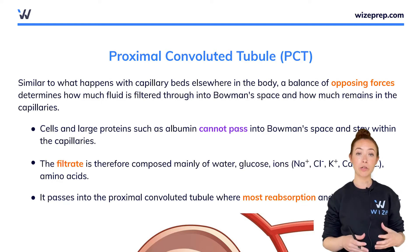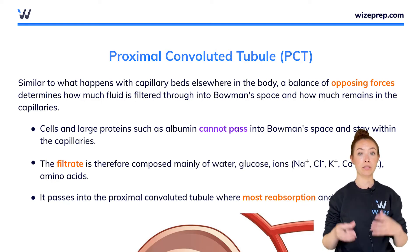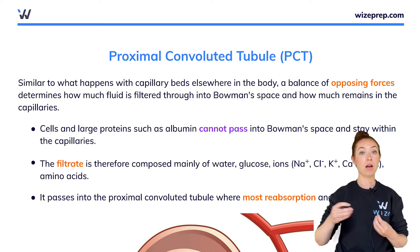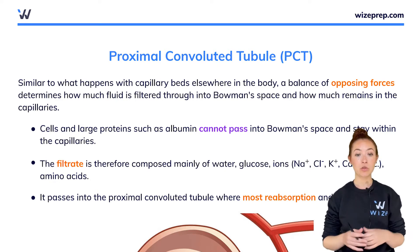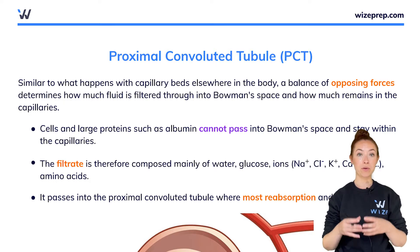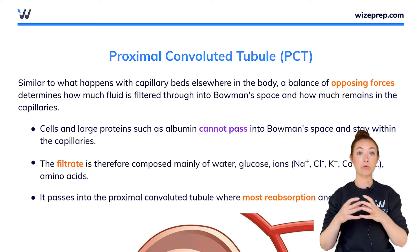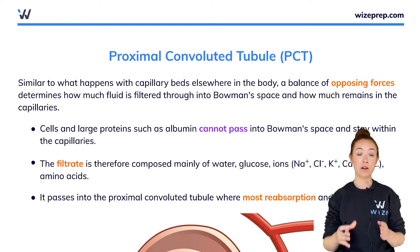Blood goes from the afferent arteriole into the glomerulus and some of it gets filtered out and becomes the filtrate as it moves into Bowman's space. In this lesson we're going to talk about what happens as filtrate starts to form and the first section of the nephron that's called the proximal convoluted tubule.